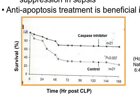As shown here, mice had CLP surgery to induce peritonitis and sepsis, and received treatment of either caspase inhibitors or control peptide, and the survival of the animals is shown here. Compared to control peptide-treated animals, caspase inhibitor treatment significantly improved survival in sepsis.